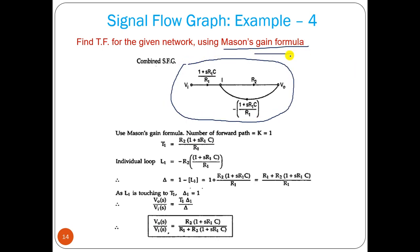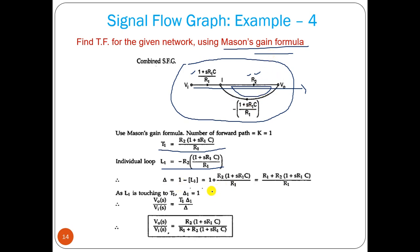Now we apply Mason's gain formula. The forward path gain T1 is R2*(1/Z). There is only one loop L1 = R2*(−1/Z). So delta = 1 − L1. With only one loop there is no need to consider non-touching loop products. Delta1 = 1 since the single forward path and the single loop are touching each other. Transfer function = T1*delta1 / delta.